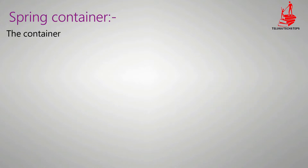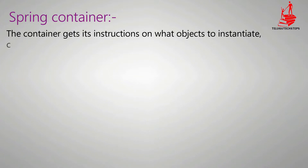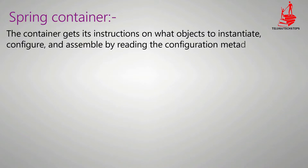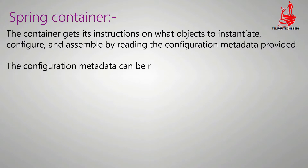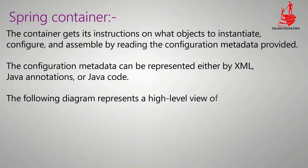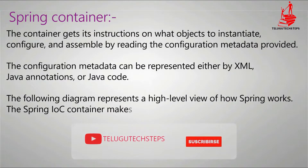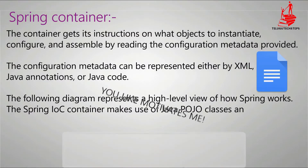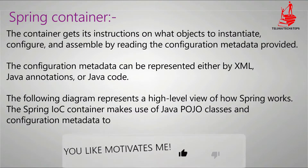The Container gets its instructions on what object to initiate, what object to configure, and what object to assemble by reading the Configuration Metadata. You can configure the application using a configuration file — for example, applicationContext.xml. With this file you can configure your application, and changes to the XML file are possible without modifying the program.